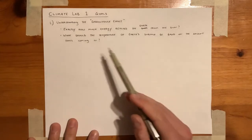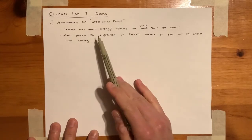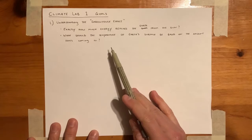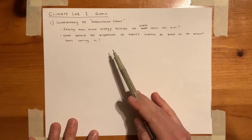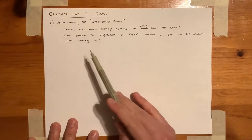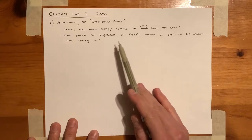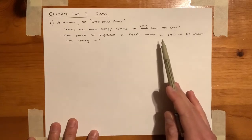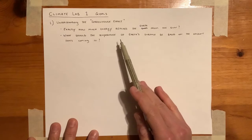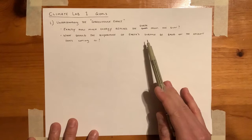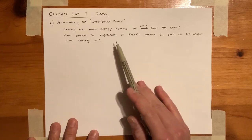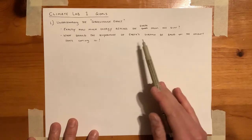The first goal of this lab is to understand what's called the greenhouse effect. The lab itself will help us understand what this thing, the greenhouse effect, is. We're going to start off by asking two questions: exactly how much energy reaches the Earth from the Sun, and what should the temperature of the Earth's surface be based on that amount of incoming energy? These are the main questions at the heart of the first part of this lab.